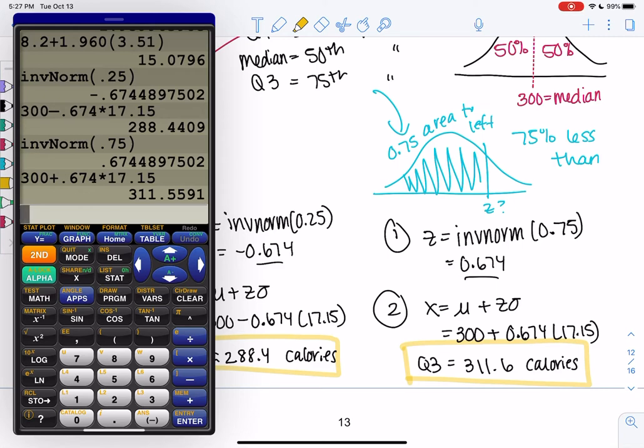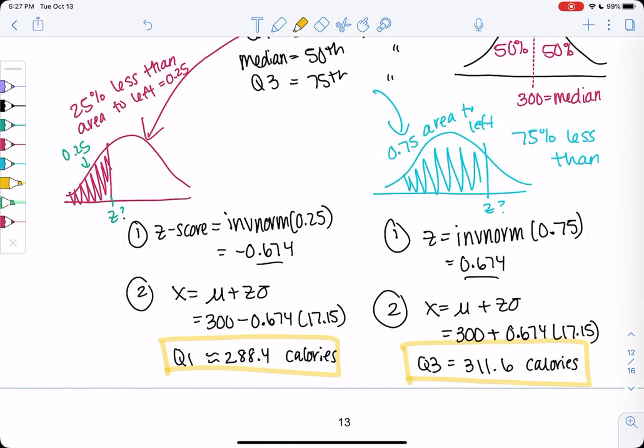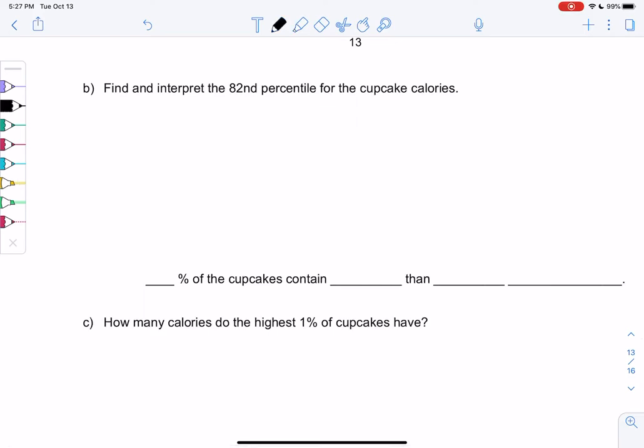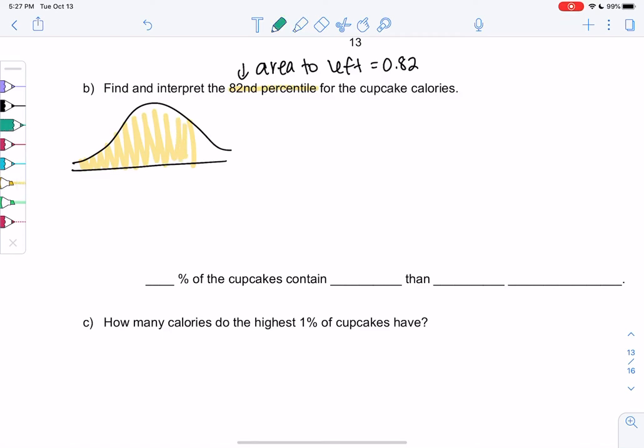So part B says find and interpret the 82nd percentile for the cupcakes. Percentiles are nice because percentiles are area to the left. So 82nd percentile means 0.82 is my area to the left for 82%. So we'll shade the curve. That'll be more than half because it's 82. And I'm not going to label the number line. I'm going to label the area. So same thing we just did. We're going to find the z-score and then de-standardize.